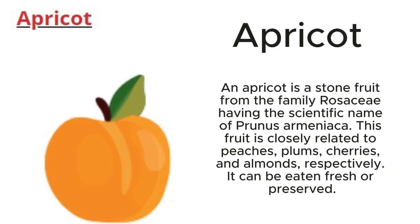Apricot: An apricot is a stone fruit from the family Rosaceae, having the scientific name Prunus armeniaca. This fruit is closely related to peaches, plums, cherries, and almonds respectively. It can be eaten fresh or preserved.